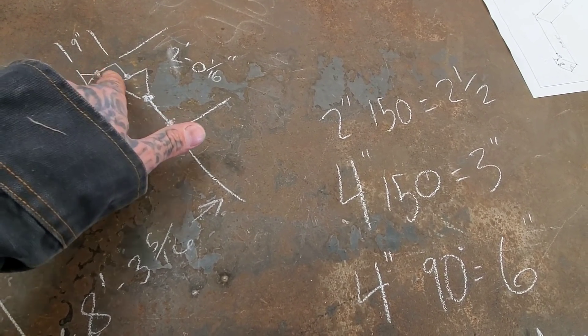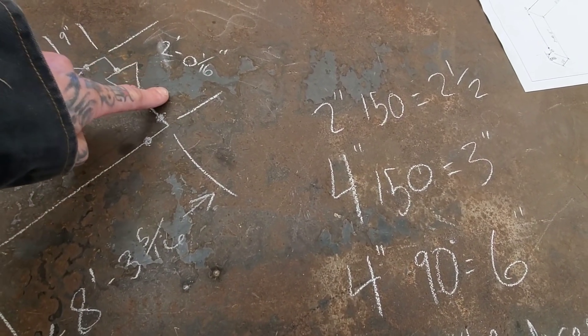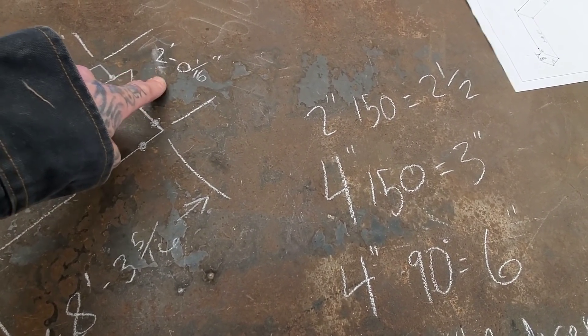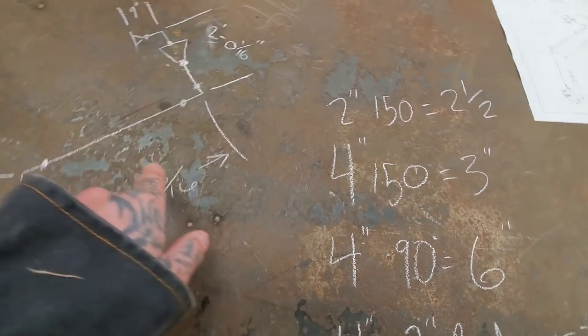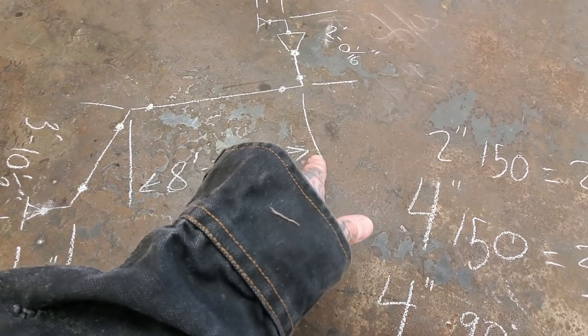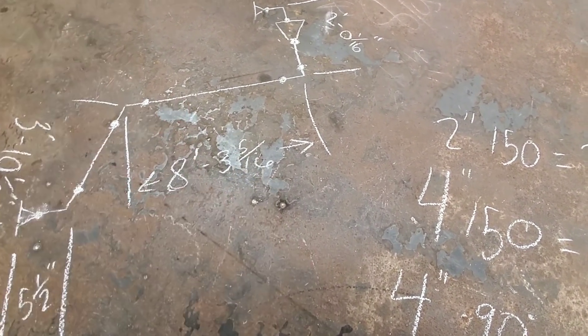What I'm describing here is that you can see the fittings to fittings and then you can see my pups. This is what my center to center is. From center to center is two feet zero and a sixteenth. From this center to center it is eight feet three inches and five sixteenths of an inch.